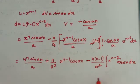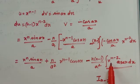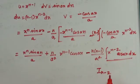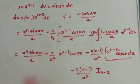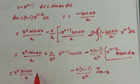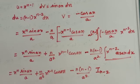Now, letting In denote the integral of x power n cos ax dx, and In minus 2 denote the integral of x power n minus 2 cos ax dx, and substituting, we get the reduction formula: In equals x power n sin ax by a plus n by a squared times x power n minus 1 cos ax minus n into n minus 1 by a squared times In minus 2. This is the reduction formula for x power n cos ax.